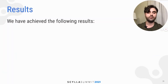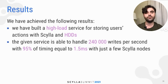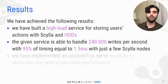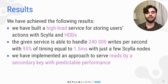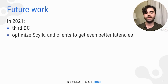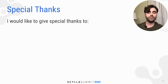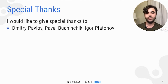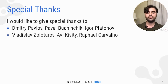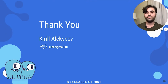To summarize: we have built a high load service for storing users' actions with Scylla and HDDs. The service is able to handle 240,000 writes per second with the 95th percentile latency of 1.5 milliseconds with just a few Scylla nodes. We implemented an approach to serve reads by a secondary key with predictable performance. Next year we are going to add a third data center, optimize Scylla and clients for even better latencies, and integrate Scylla into more projects. Special thanks to Dima and Pasha for helping build and deploy this service, to Igor for approving the R&D process, to Vlad, Avi, and Rafael for help in GitHub issues and Slack, and to the whole ScyllaDB team for an awesome product.